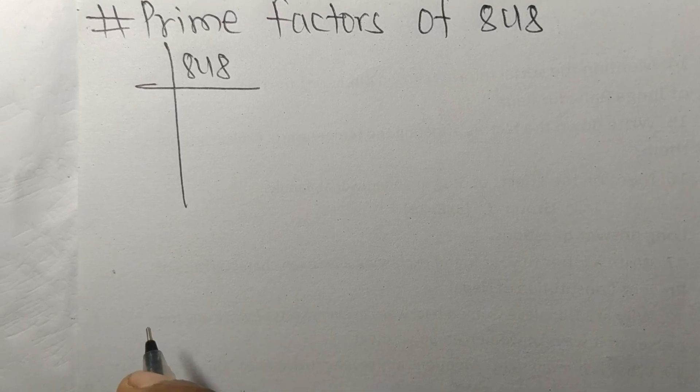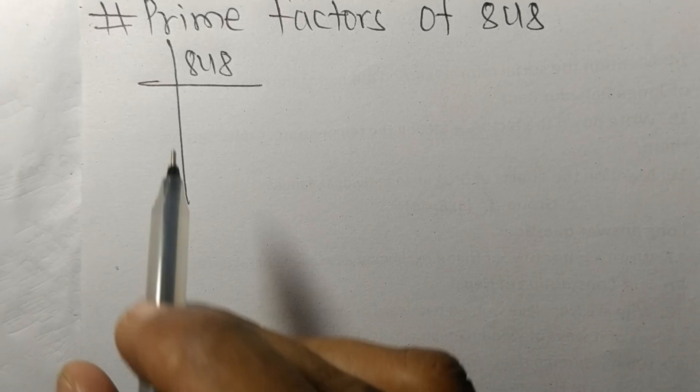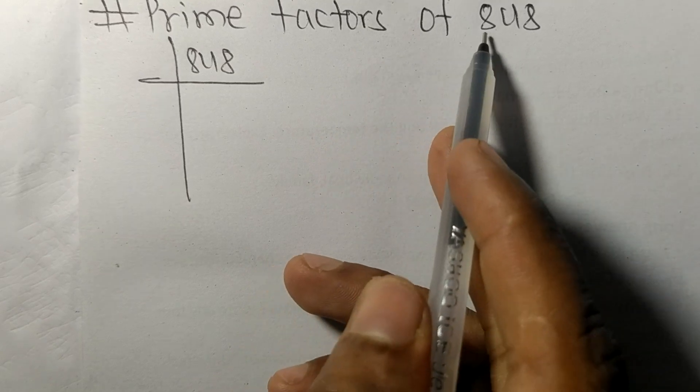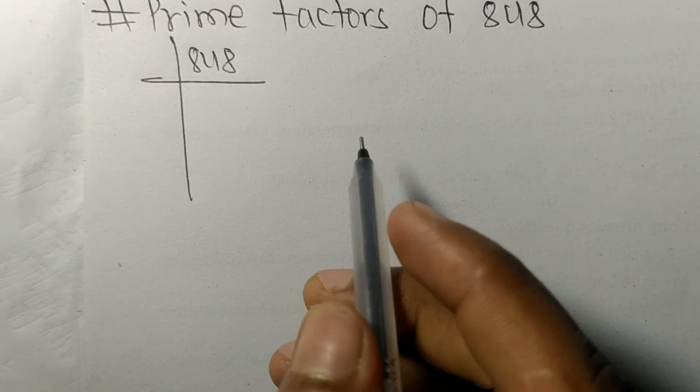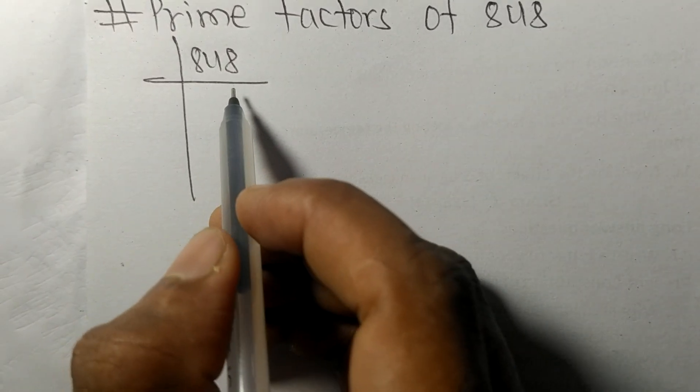So today in this video we shall learn to find the prime factors of 848. So at last it contains an even number 8, so this whole number is divisible by 2.